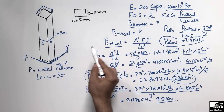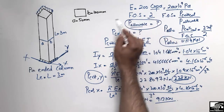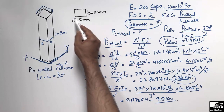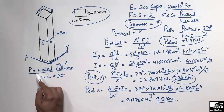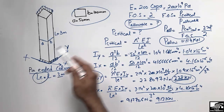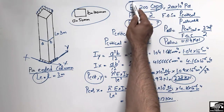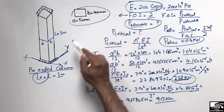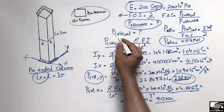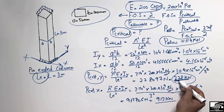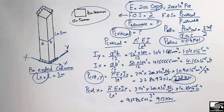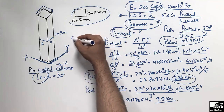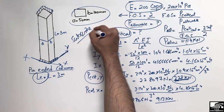I hope you understand how to find the allowable load for a column. You need the column dimensions, support conditions (which affect effective length), modulus of elasticity, and factor of safety. Find P_critical, take the minimum value along the axes, and divide by the factor of safety to get P_allowable. Don't forget to subscribe to our channel. Thank you for watching.